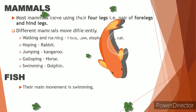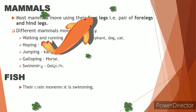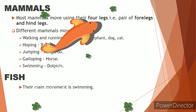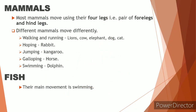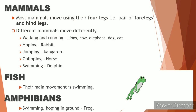Fish obviously live in water, so they have to swim. See the fish how it is swimming here and there using its fins. And last, amphibians — they also hop, walk, or swim. When they live in water, they swim; when they live on ground, they hop or walk.